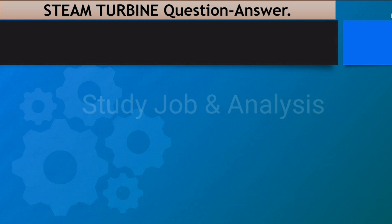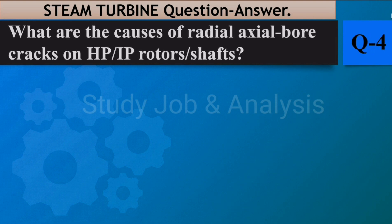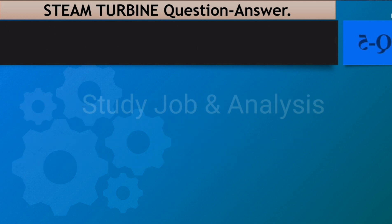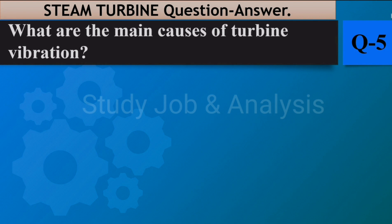Question number four: What are the causes of radial and axial bore cracks on HP/IP rotor shafts? Answer: The predominant cause is creep, which may act with or without low cycle fatigue. Cracks also result due to poor creep ductility caused by a faulty heat treatment process.